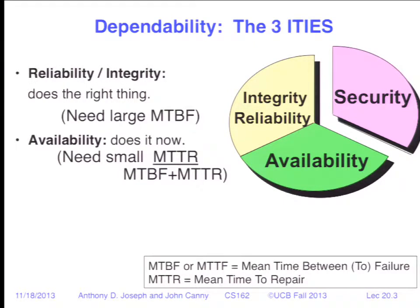Availability means the system does it now. The system might correctly be capable of debiting $50 and giving you $50, but if the ATM is not working it's not very available — it needs to work right now when you're standing in front of it. For that, we need a small mean time to repair: when it breaks, how quickly can you fix it? Availability is a function of mean time to repair over the mean time between failure plus mean time to repair. We want very large mean time between failure and very small mean time to repair.